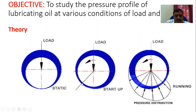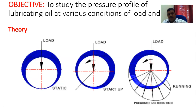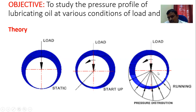When there is minimum thickness between the journal and the bearing, that will be the point of maximum pressure, and as thickness increases, pressure will decrease. When the oil film is at its maximum, pressure may be negative there — maximum at the thin side, minimum at the thick side. The second figure indicates the transition phase; the third one shows maximum speed conditions.